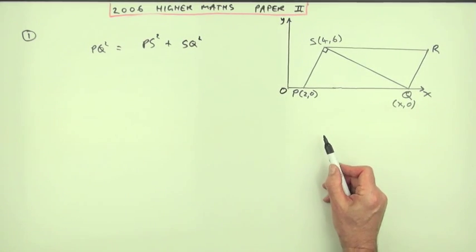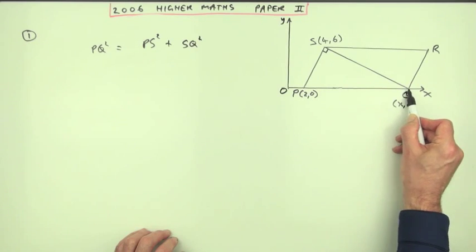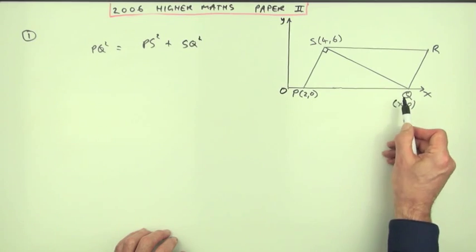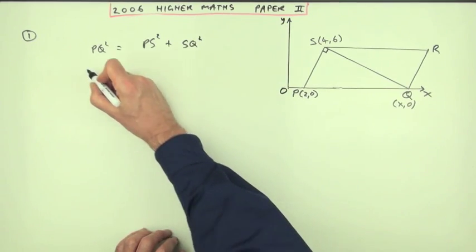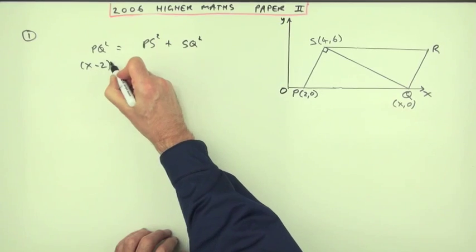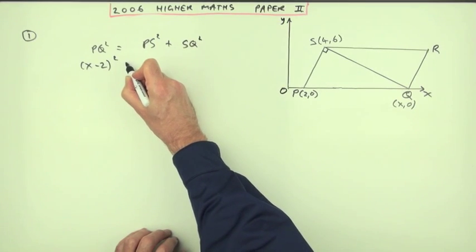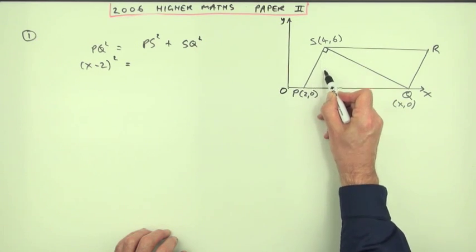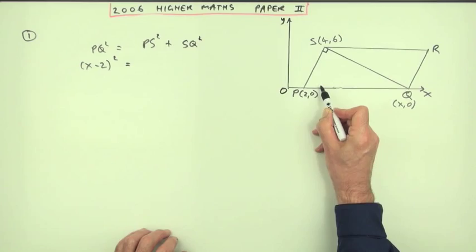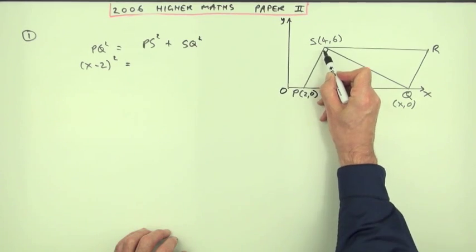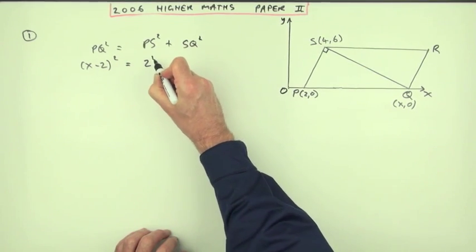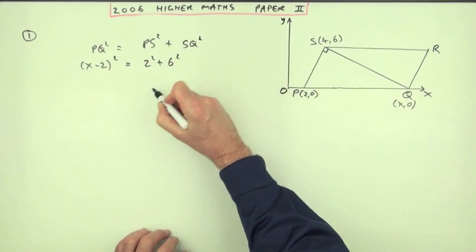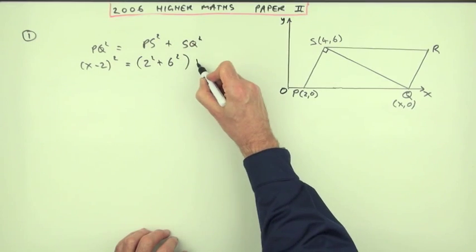PQ squared must be PS squared plus SQ squared. Now, how do you find these distances? Well, PQ is an easy one because it's a horizontal line. That would just be the difference in the X coordinates, since there's no difference in the Ys. So it's just X minus 2. So if the length of PQ is X minus 2, it's squared as X minus 2 squared. How do you get PS squared? You use its own little right-angle triangle. Difference in X's squared plus difference in Y's squared. Difference in the X's squared, 2 to 4, is 2 squared. Difference in the Y's squared, 0 up to 6, is 6 squared.